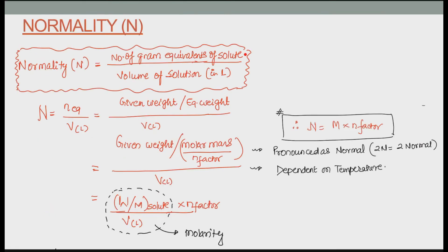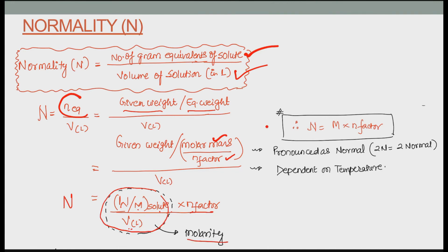Another important concentration term is normality. Here the numerator is number of gram equivalents of solute, and the denominator is volume of solution in litres. Gram equivalents = given weight ÷ equivalent weight, and equivalent weight = molar mass ÷ n factor. So normality = molarity × n factor. It is pronounced as normal — 2N means 2 normal. Normality is temperature dependent because it contains a volume term.